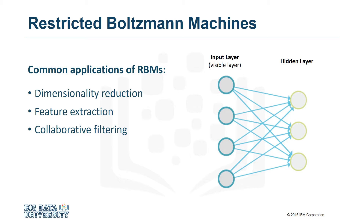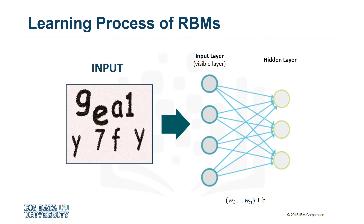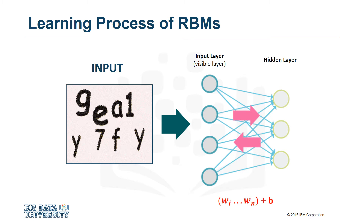So let's take a closer look at the learning process of an RBM. RBMs learn patterns and extract important features in data by reconstructing the input. So let's say that we provide an image as input to an RBM. The pixels are processed by the input layer, which is also known as the visible layer. The learning process consists of several forward and backward passes, where the RBM tries to reconstruct the input data. The weights of the neural net are adjusted in such a way that the RBM can find the relationships among input features and determine which features are relevant.